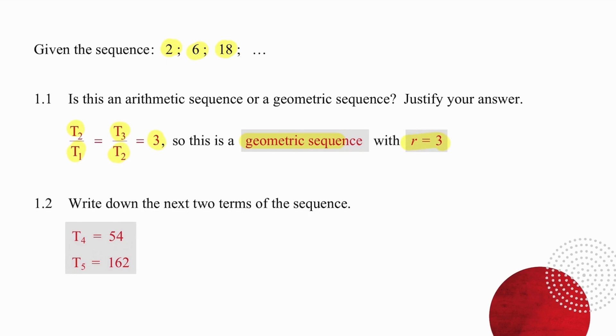The next two terms in the sequence we simply multiply 18 by 3 to get 54 and again we multiply 54 by 3 to get 162.